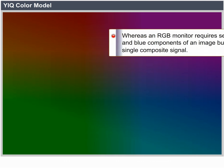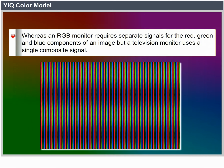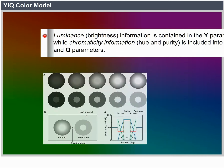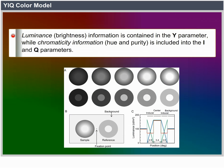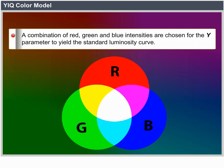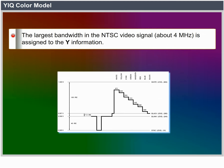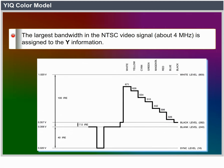YIQ color model. Whereas an RGB monitor requires separate signals for red, green, and blue components, a television monitor uses a single composite signal. The National Television Systems Committee (NTSC) color model for forming the composite video signal is the YIQ model. Luminance and brightness information is contained in the Y parameter, while chromaticity information — hue and purity — is incorporated in the I and Q parameters. A combination of red, green, and blue intensities is chosen for Y to yield the standard luminosity curve. Since Y contains luminance information, black and white television monitors use only the Y signal. The largest bandwidth in the NTSC video signal, about 4 MHz, is assigned to the Y information.